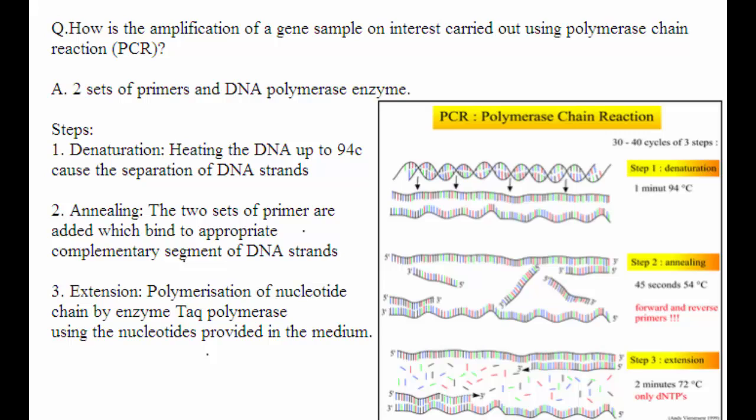If we see here, we require two sets of primers and DNA polymerase enzyme for this PCR reaction. This DNA polymerase enzyme is thermostable, which is isolated from a bacterium called Thermus aquaticus, called as Taq polymerase.